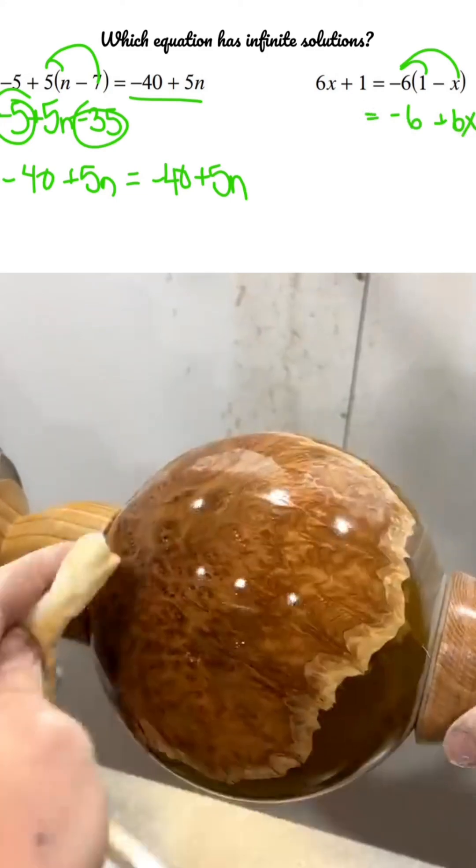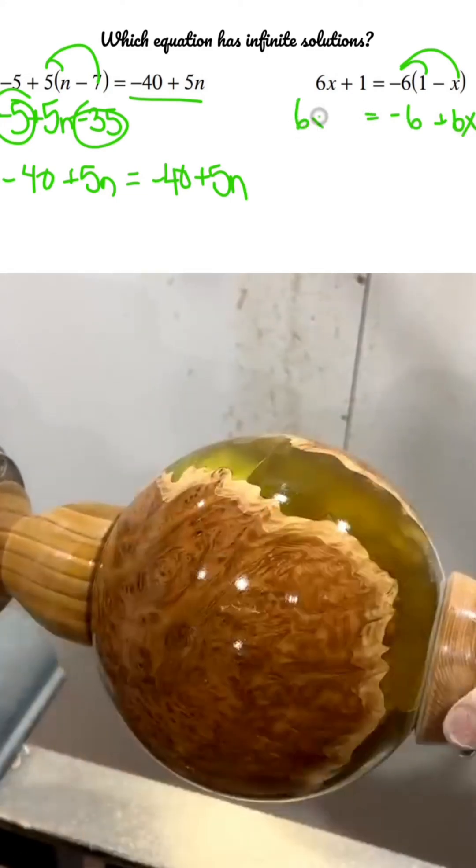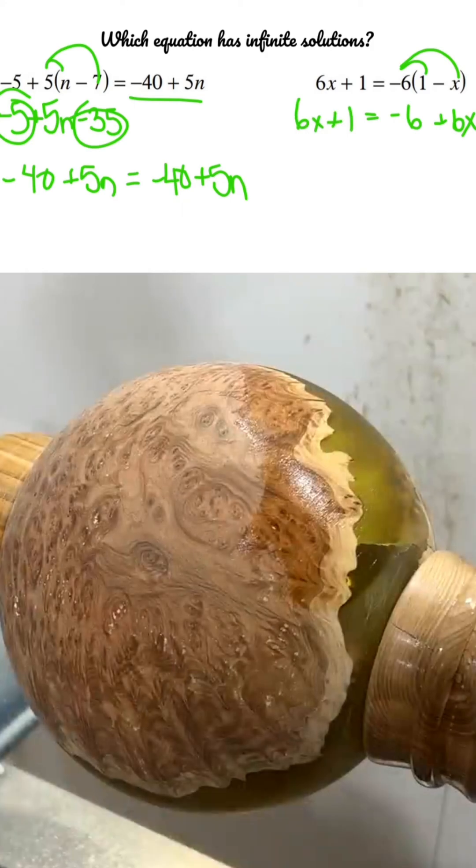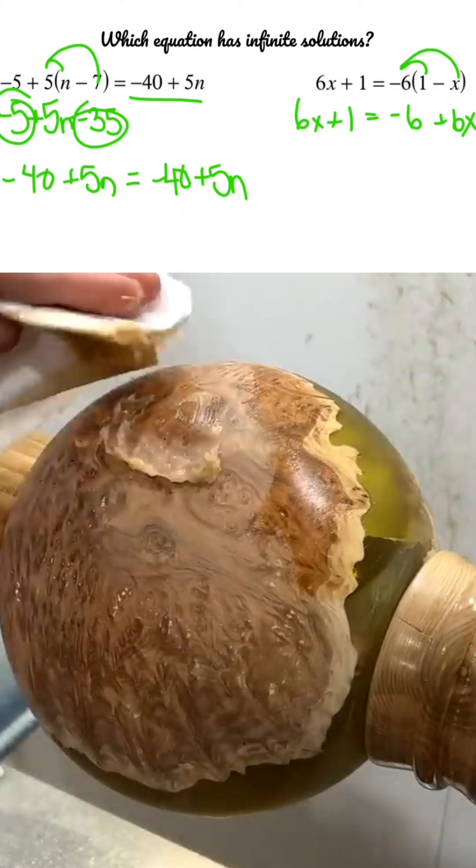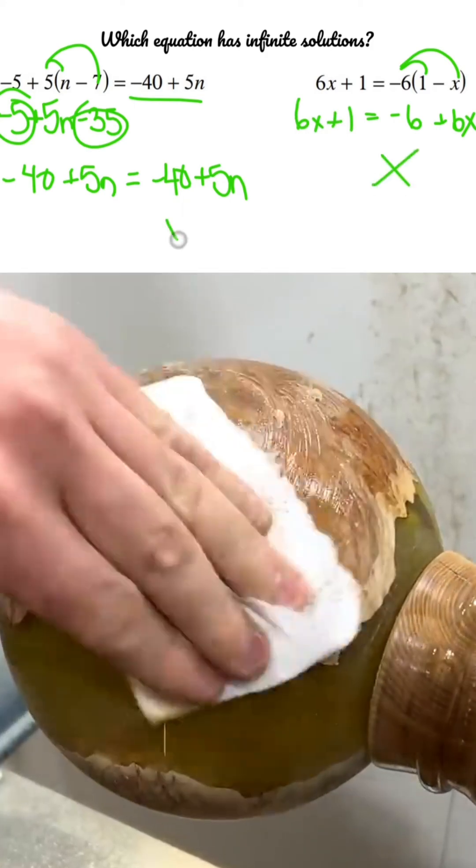On the left side, I do have a 6x, so that crosses out, but I have plus 1. So this is not the infinite solution. This is the no solution. That's my infinite.